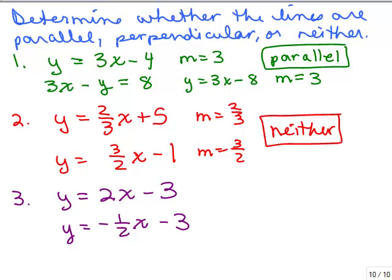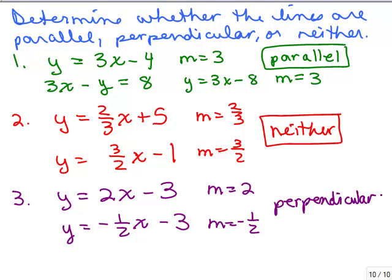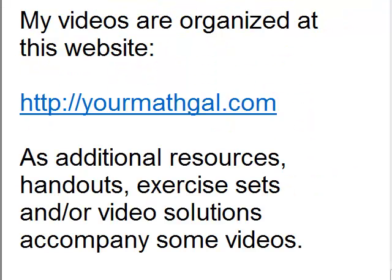For the last one, in slope-intercept form: the first line has slope 2, and the second has slope negative 1 half. Are they the same? No. Is one the negative reciprocal of the other? Yes. So these are perpendicular. That's all there is to it.